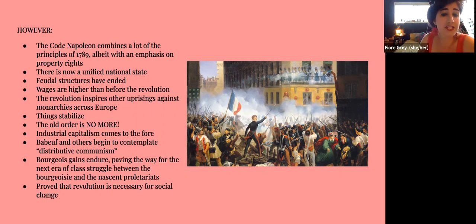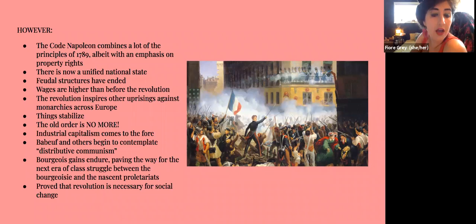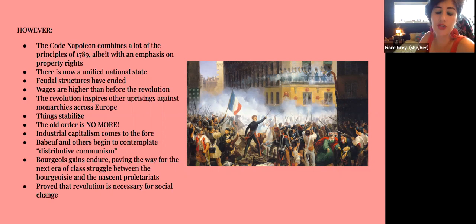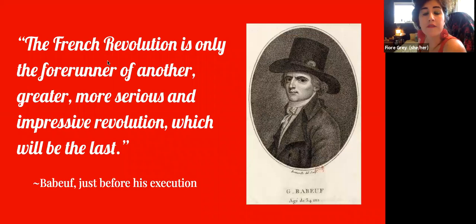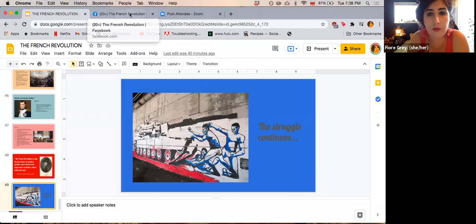Babeuf and others began to contemplate distributive communism, paving the way for people to start thinking about other kinds of social structures and ways of distributing wealth. The bourgeois gains endured, paving the way for the next era of class struggle between the bourgeoisie and the nascent proletarians. The revolution proved that revolutionary action was necessary for massive social change — that was the big takeaway Marx took from the revolution. As Babeuf said, just before his execution: 'The French Revolution is only the forerunner of another, greater, more serious and impressive revolution, which will be the last.' The legacy of the French Revolution has continued and persisted ever since, and the struggle continues.